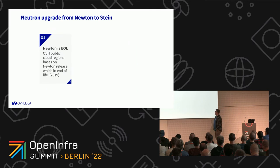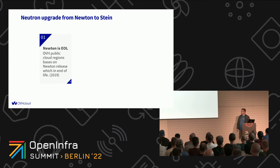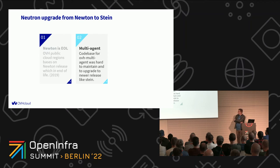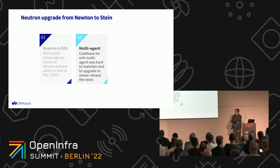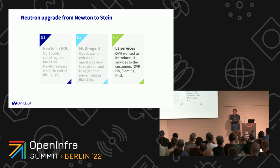We're going back to 2019, when our infrastructure was on OpenStack Newton. Newton had reached end of life, so we needed to move to the next release, and we decided to go with Stein. The networking part that David explained was implemented as a multi-agent solution, and the code base of the multi-agent was based on Newton code. So it was really difficult and painful for us to update to Stein. And the final concern was that we wanted to introduce L3 services for our customers.